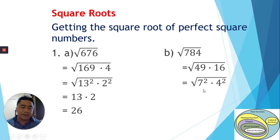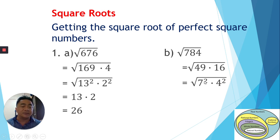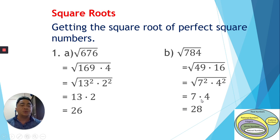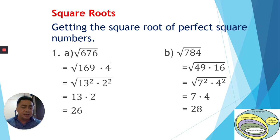Since we have power 2 on both terms, we can move them out of the radical sign. The power 2 is cancelled out by the radical sign (one-half), leaving us with 7 times 4. Therefore 7 × 4 = 28, so the square root of 784 is 28. Just follow the method — reduce the number by finding perfect square factors.